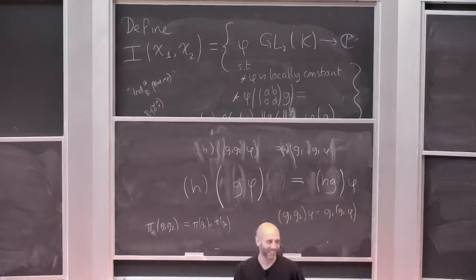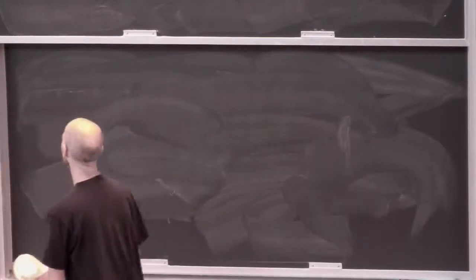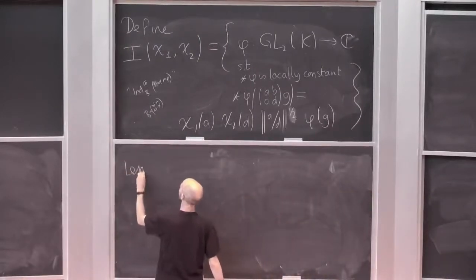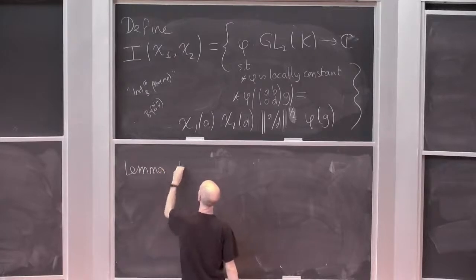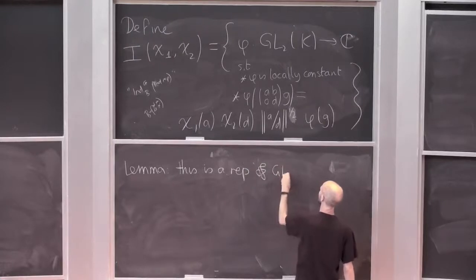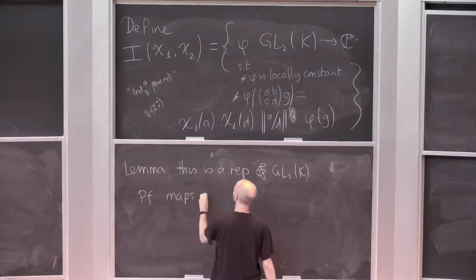It took me years to realise that's the point — maps can go on the right, and sometimes it's a really cool idea. So that's the proof that this is an action. Lemma: this is an action. This is a representation of GL₂(K). Proof: maps on the right.